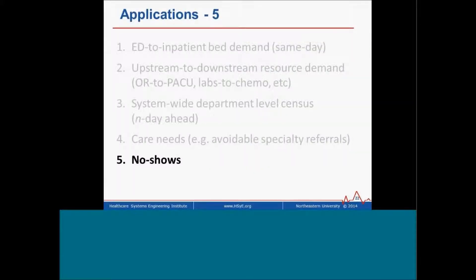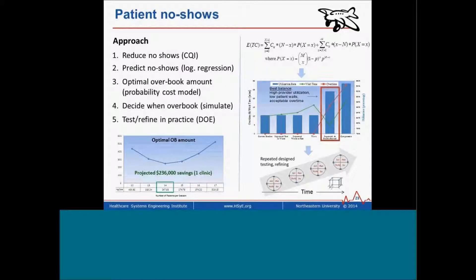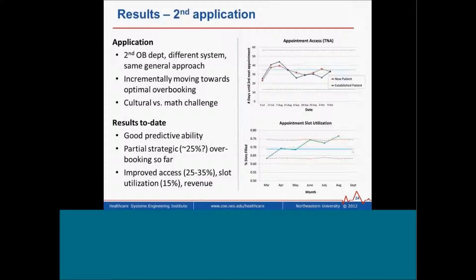Let me talk briefly about no-shows, because it involves predictive modeling. From a process improvement perspective, what can we do to reduce the no-show rate? But you're always going to have some no-show rate, so can we predict it? And if you can predict it, how do you optimally overbook, analogous to what airlines and hotels do? What's the right amount to overbook, using simulation or algorithm to figure out where in the day to overbook, and then putting this into practice through a series of incremental scale-up tests? Predicting no-shows creates opportunities to use retrospectively unused appointment slots to increase revenue and improve appointment access by working down the queue.